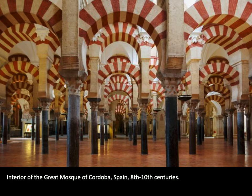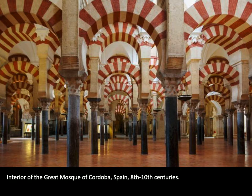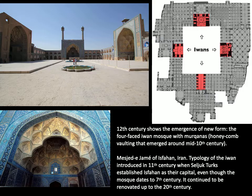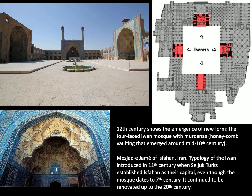During the second caliphate under the Umayyads, where the leadership of the Muslim community was located in Damascus, Syria, the arch gained increased prominence. It was set against a flat wall surface to really accentuate the effect of its shape, notably in the great mosque of Cordoba. It was in the 12th century that a new form began to emerge, known as the Four-Faced Iwan Mosque, with the Muqarnas or honeycomb vaulting emerging around the mid 10th century, taking increasing prominence as a fascinating architectural feature.